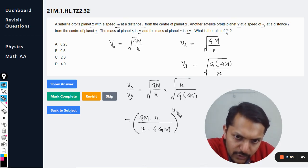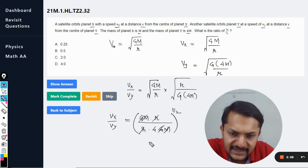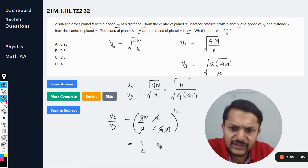Raised to power half. And this is what is our answer. So GM and GM gets cancelled out. So it is coming out to be 1 by 2, and so the answer is 0.5.